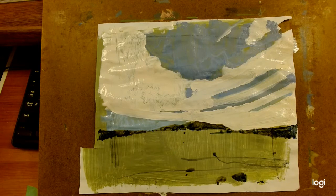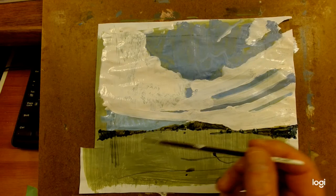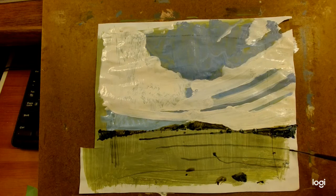Chroma, saturation, and value, of which value is probably the most important one, value being the degree of light or dark in a color.